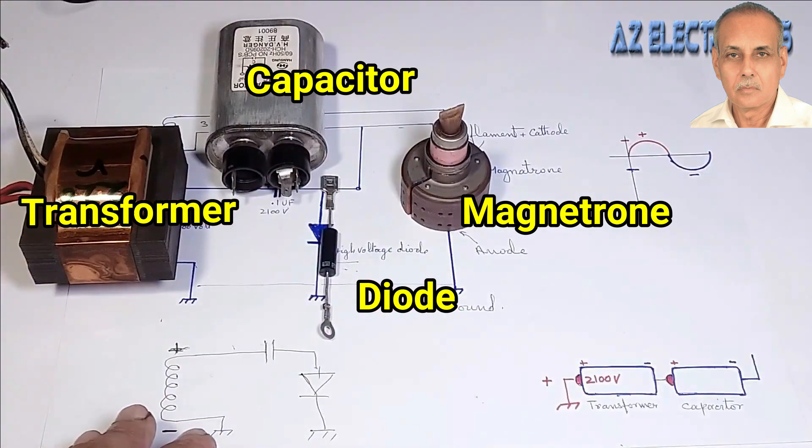This transformer is definitely not for a microwave oven. I have kept this just to make you understand. Actually, it is a transformer, a capacitor, a diode and a magnetron. These four things generate microwave energy.